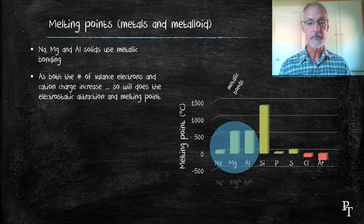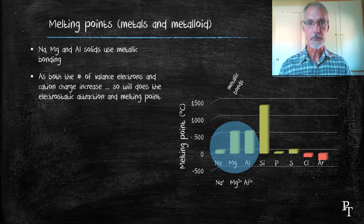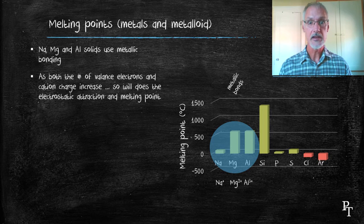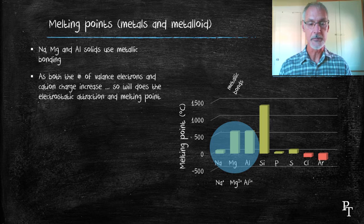In fact, as we move from sodium across to aluminum, we get an enhancement of the metallic bond. That's because there are both more valence electrons and greater charges in the cation. And not to mention, our ions also get a little bit smaller.